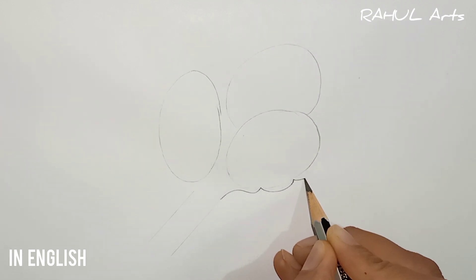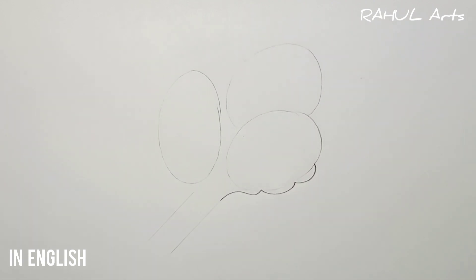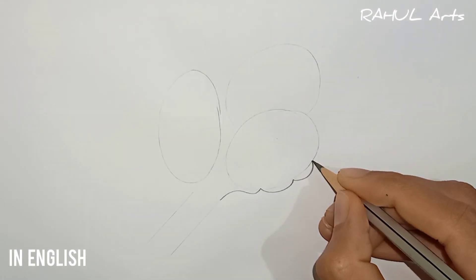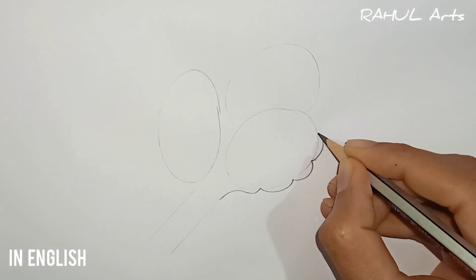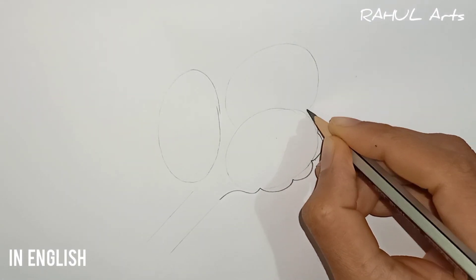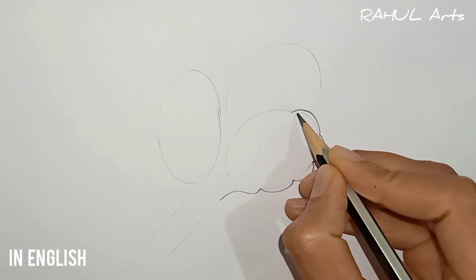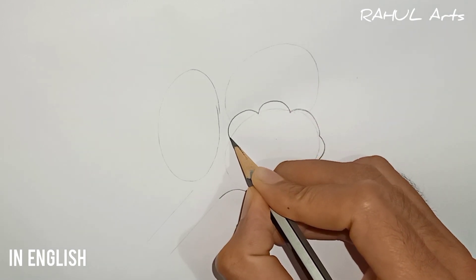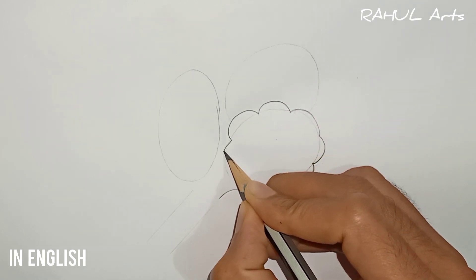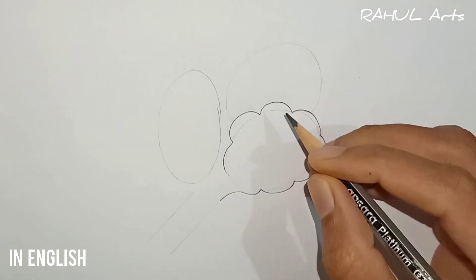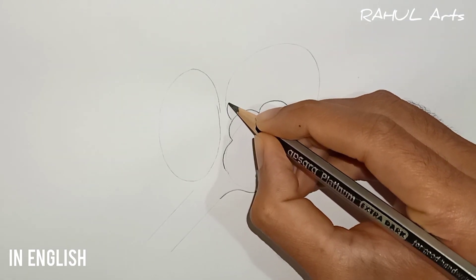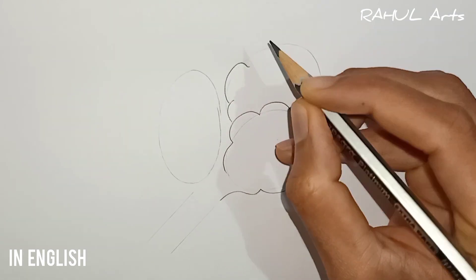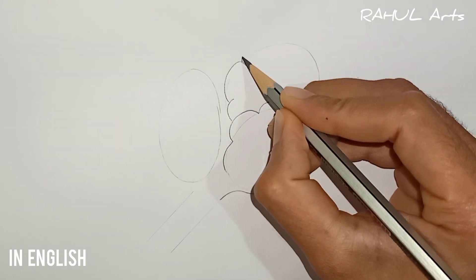Now outline the boundaries with dark strokes. While outlining the ovals, try to make it a type of cloudy structure which will represent the alveolar sacs. After completing the first oval, try to do the same with the second oval on top of the first one.